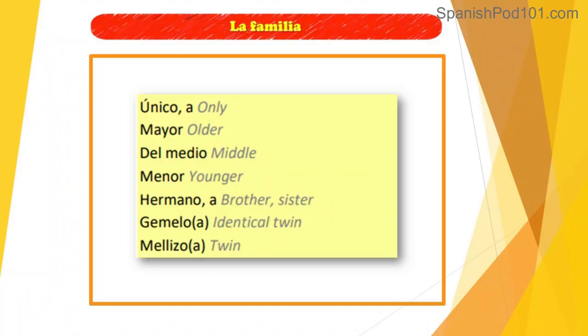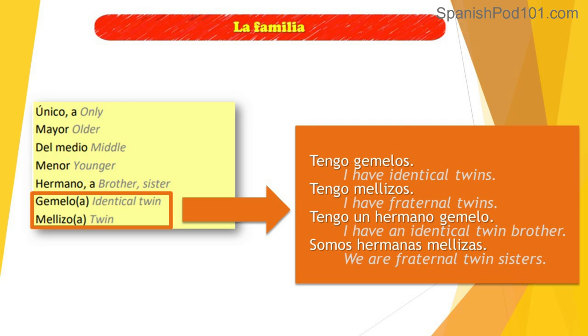Now let's learn adjectives to describe brothers, sisters, and children: único/única (only child), mayor (oldest), la del medio (middle), menor (youngest), gemelo/gemela (twin). For twins in Spanish: gemelos are identical twins and mellizos are fraternal twins.